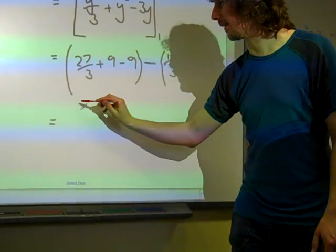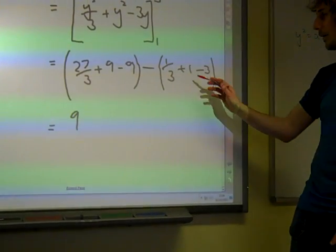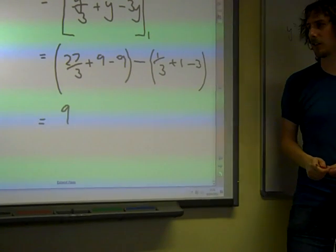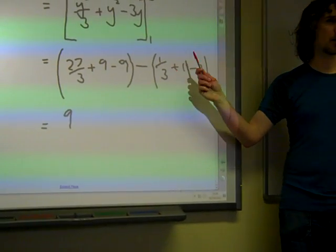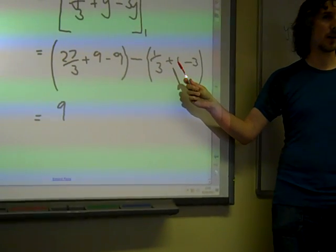What have we got? We've got 9 out of that bracket. That's about it. Here we've got 1 minus 3, so that's -2. And a third in there. So that is -5/3.